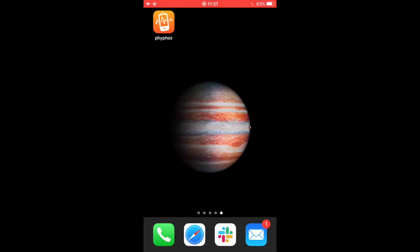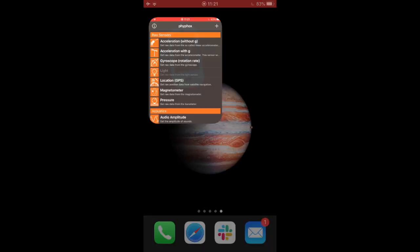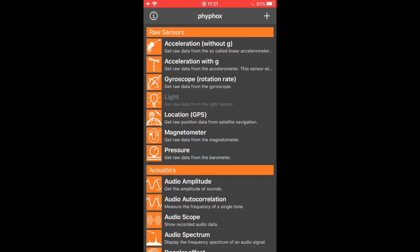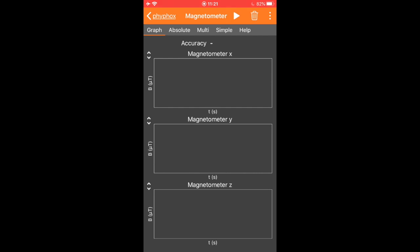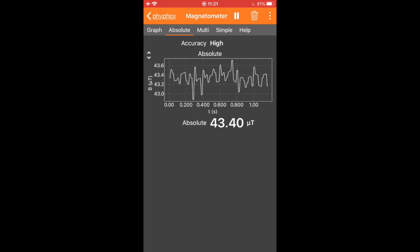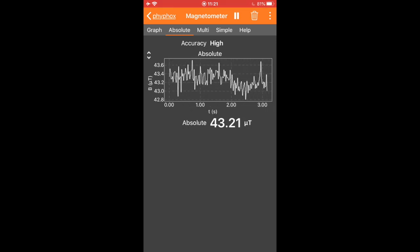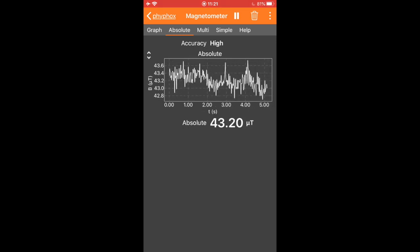To collect data for this experiment, we'll want to go into the Phyphox app and select the magnetometer data. The mode we want to use here is absolute. So I've already calibrated my magnetometer and I've set it by the appliance. I'm just going to set it to taking data, noticing that the signal is relatively constant around 43 microtesla.